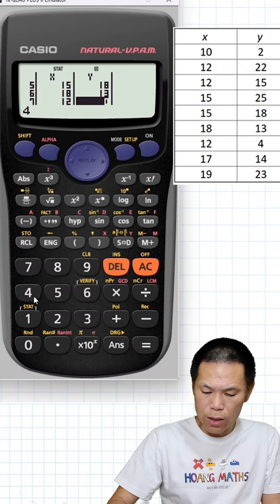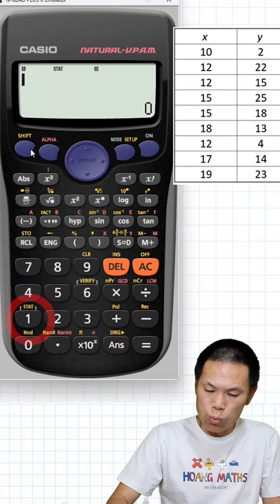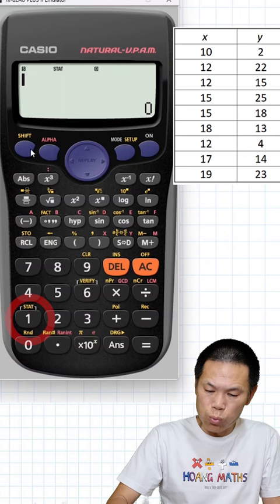Clear the data first by pressing the AC button, then press shift and 1. Press 5, then option 3, press 3. Don't forget to press equal. There you go.